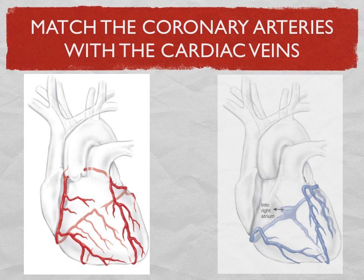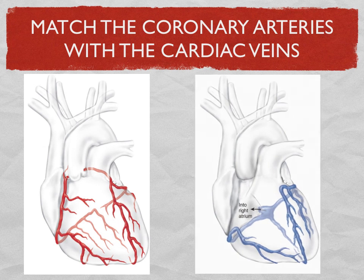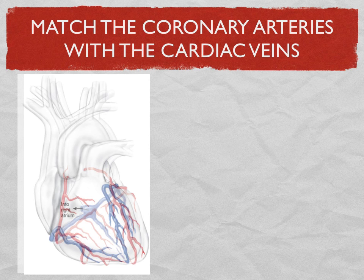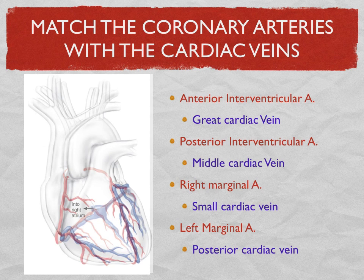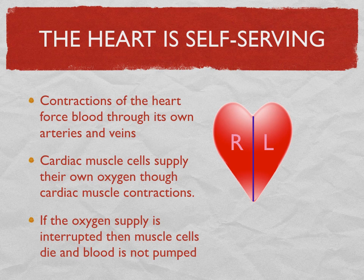One of the big things a student needs to know is that when you talk about the arteries feeding the heart, this is critical. This is bringing the oxygen that keeps the cells contracting. There is no heartbeat, there is no blood pressure if these cells run out of oxygen. Contractions of the heart force blood through its own arteries and veins. Cardiac muscle cells supply their own oxygen because this is a self-serving organ. If the oxygen supply is interrupted, the muscle cells die and blood is not pumped.